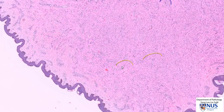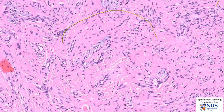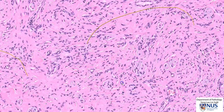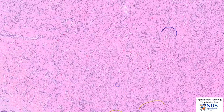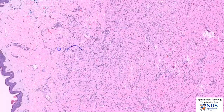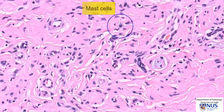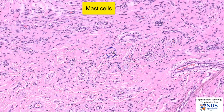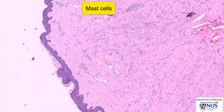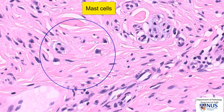We may also sometimes see small neural structures within neurofibromas, and this is not an uncommon occurrence. Lastly, we may also see occasional mast cells quite frequently in neurofibromas. These are recognized as cells with a rather squarish shape, with a very bland nucleus and bluish granular cytoplasm. There is another one here and another one here.